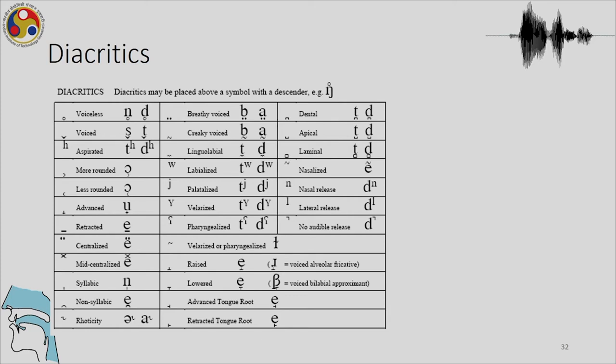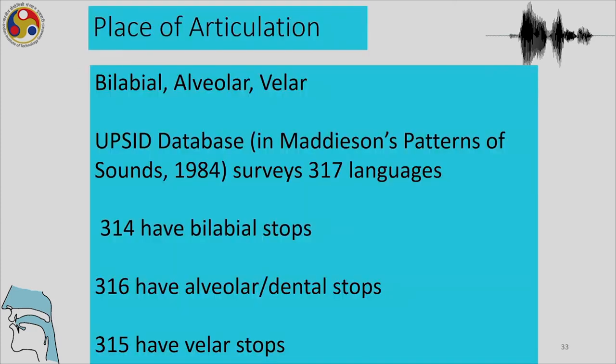This is the full list of diacritics available, and some of these distinctions — such as apical, laminal, and lingolabial — we have just considered extensively.